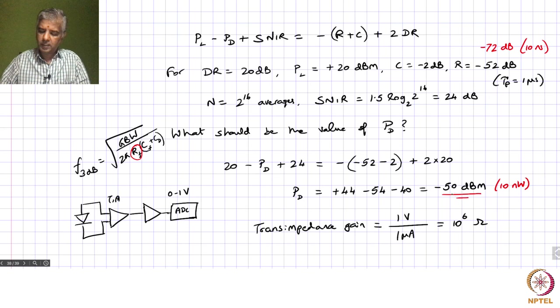With 70 MHz bandwidth required, the achievable trans-impedance gain from the TIA is even less, potentially requiring two additional amplifier stages beyond the TIA. Each added amplifier contributes extra noise figure, degrading the signal-to-noise ratio and the achievable P_D. Combined with the worse R value of −72 dB, achieving 1-meter spatial resolution may only support a dynamic range of about 10 dB rather than 20 dB. A trade-off between spatial resolution and dynamic range is necessary, and an APD receiver — providing ~20 dB gain — would be required.